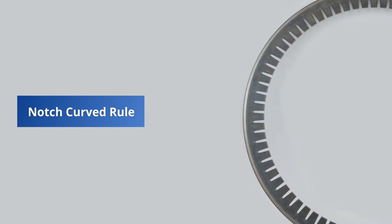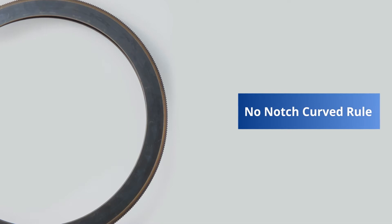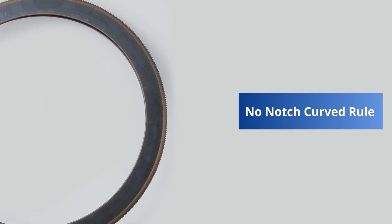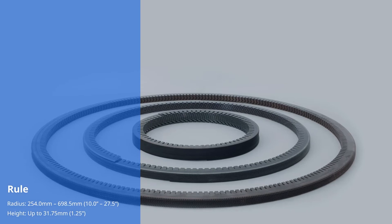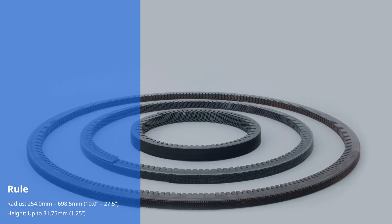EasyBender R-Pro is capable of processing and bending four-point notched and no-notch curved rule up to 31.75 millimeters from 254 to 699 millimeter diameter of the curved steel rule.